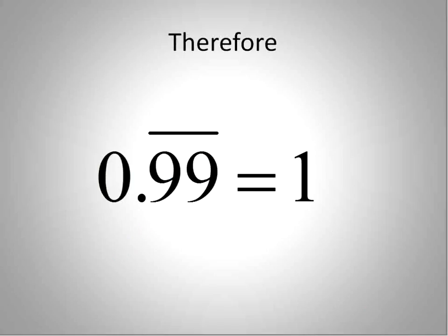So go ahead and show that one to your teacher. Freak them out a little bit. Try and have them prove that 0.999 is not equal to 1. See if they can do that. But as far as I'm concerned, there's a mathematic proof. Therefore, it is fact. 0.999 repeating is, in fact, equal to 1.